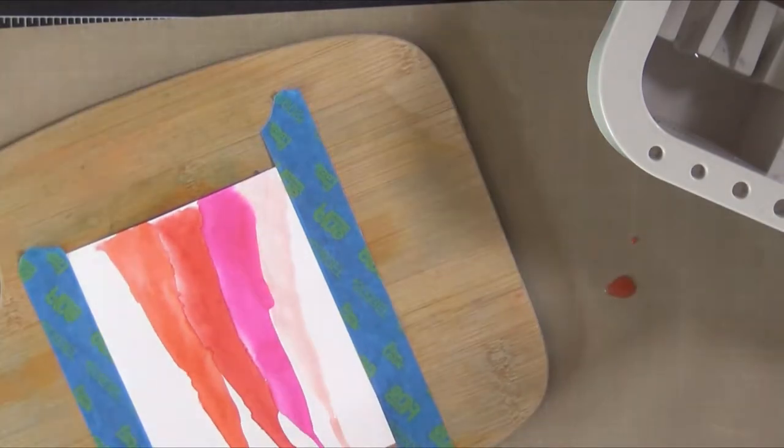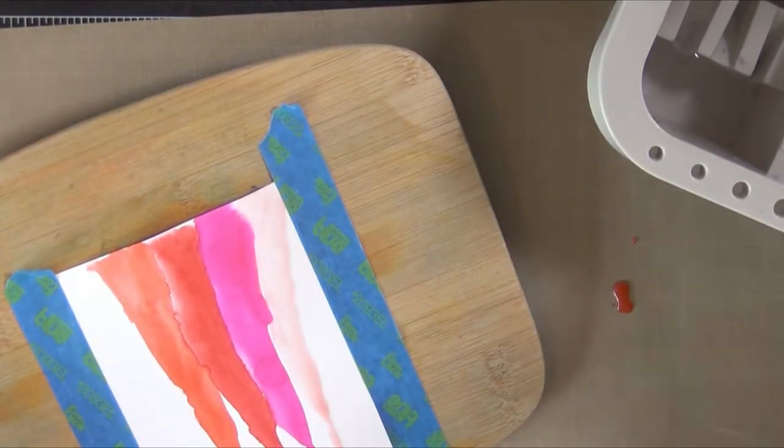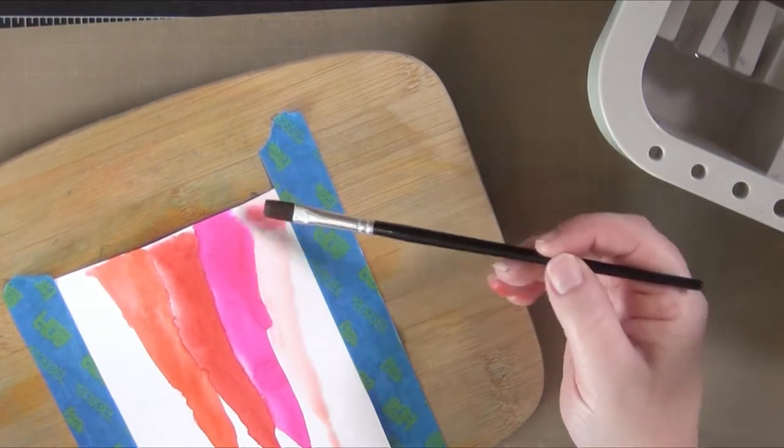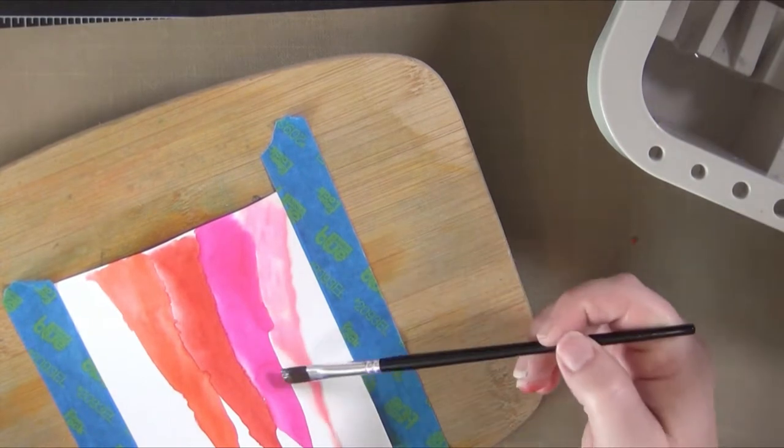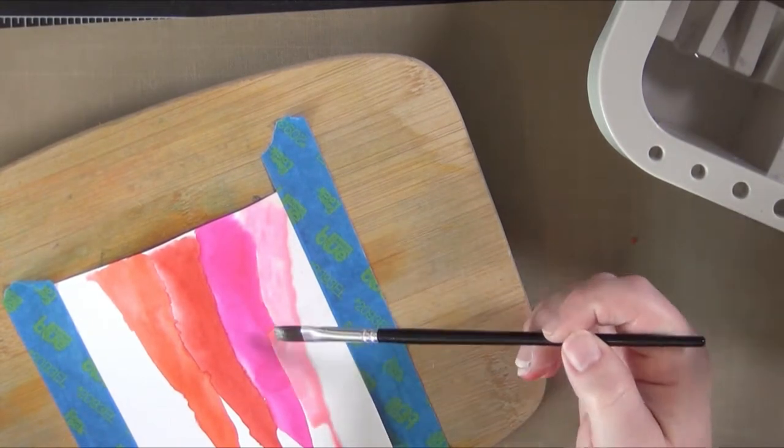I also did not like how pale this color was, you almost couldn't see it. So I'm going to custom make a color. I've used the Spun Sugar but then I've added some of the Bubblegum Pink Delusion Spray into it to make it a little bit darker.